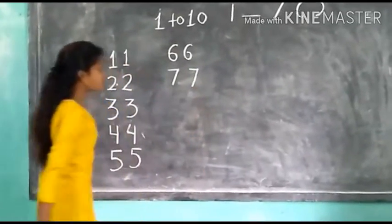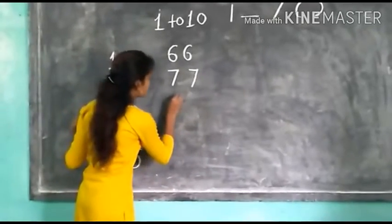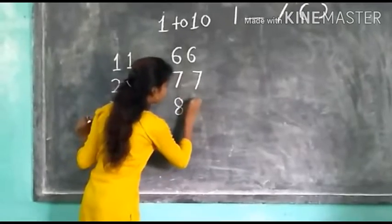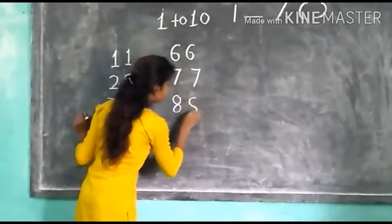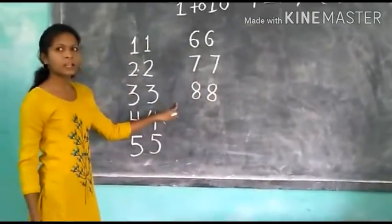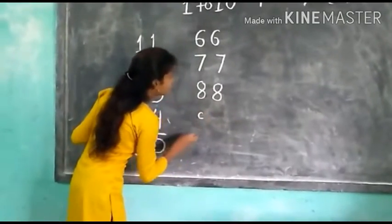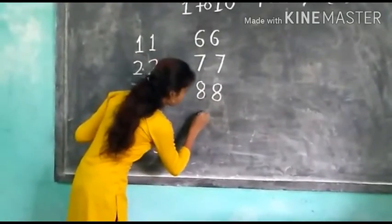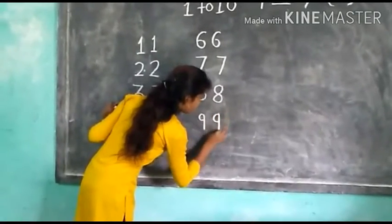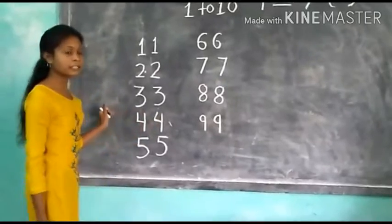Next number is 8. Curved and curved. 8. Next number is 9. Curved and standing line. 9.